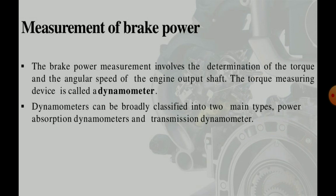Brake power measurement involves the determination of torque and angular speed of the engine output shaft. The torque measurement devices are called dynamometers, and dynamometers can be broadly classified into two types: power absorption dynamometers and transmission dynamometers.